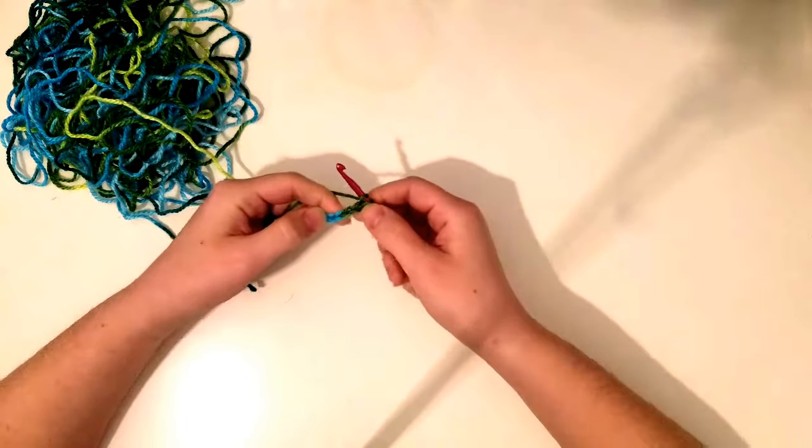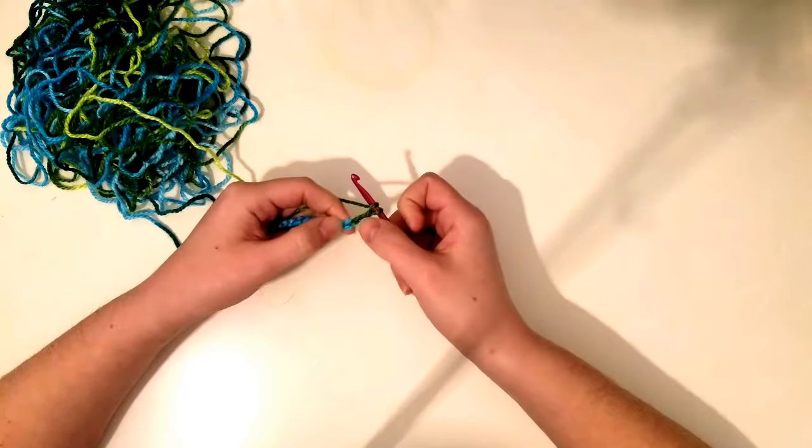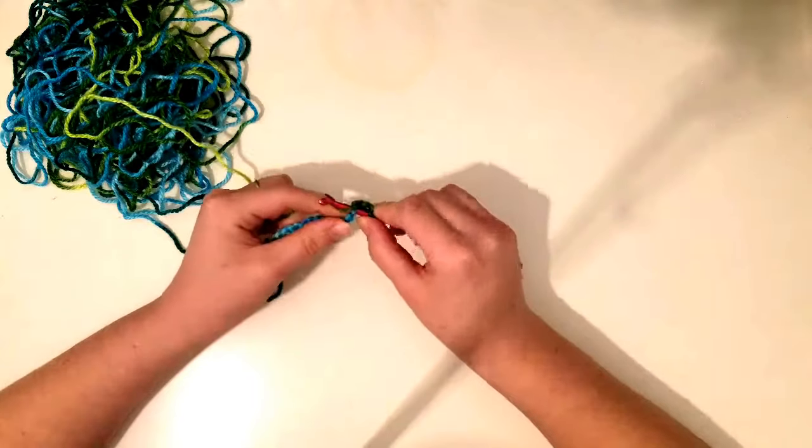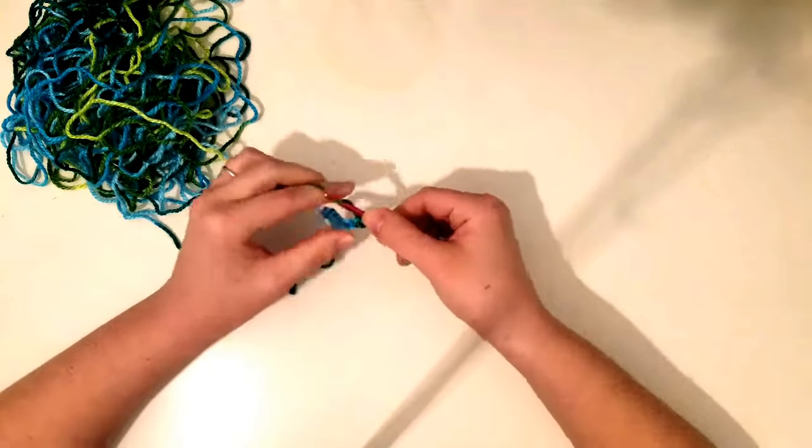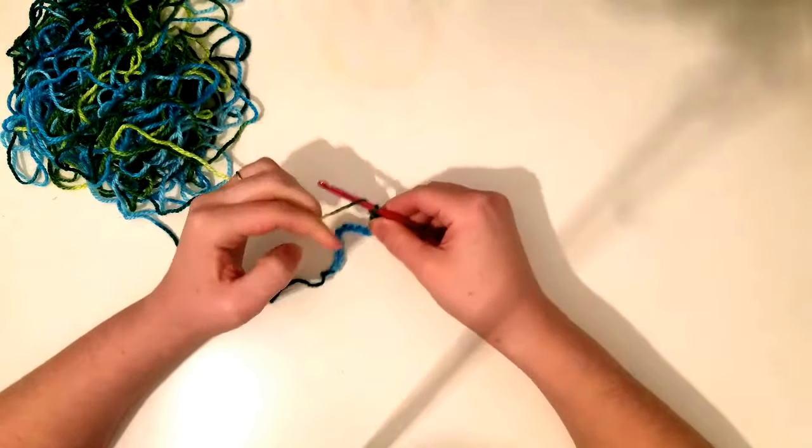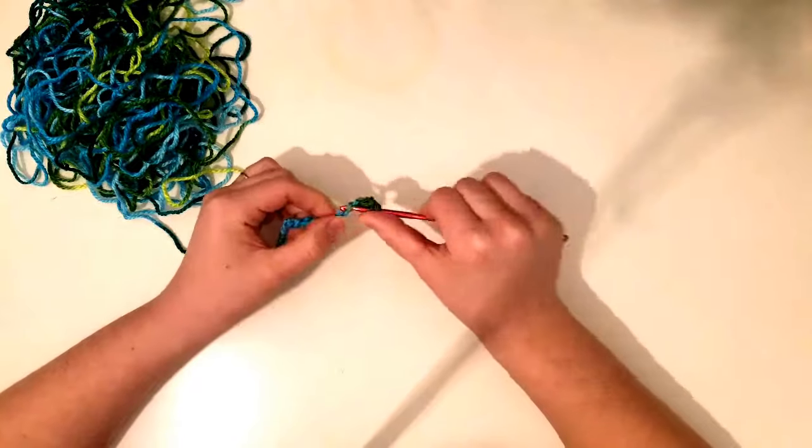Yarn it over, and you're going to do a double crochet in the third chain from the hook. So that's one, two, three right here on the blue. So bring it up and do your double crochet.